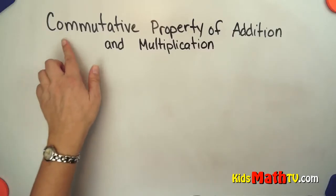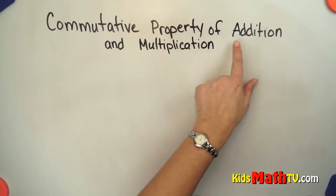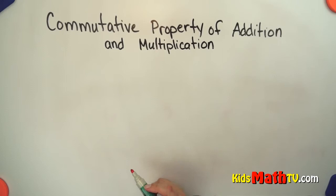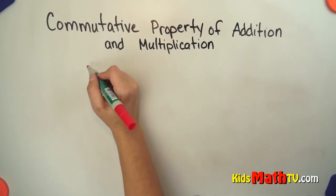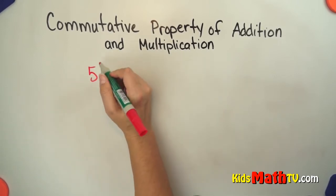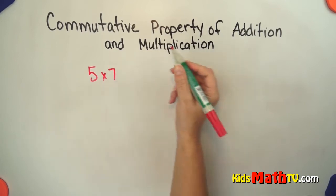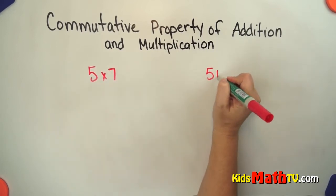In this lesson you will learn about the commutative property of both addition and multiplication. Basically the commutative property says that no matter which order, so if we have 5 x 7 or we have 5 plus 7...